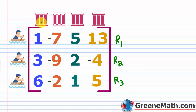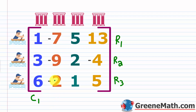So we have 3 rows. Then you see the picture for a column — columns are vertical, going up and down. So this is column 1, this is column 2, this is column 3, and this is column 4. So this matrix has 3 rows and 4 columns.